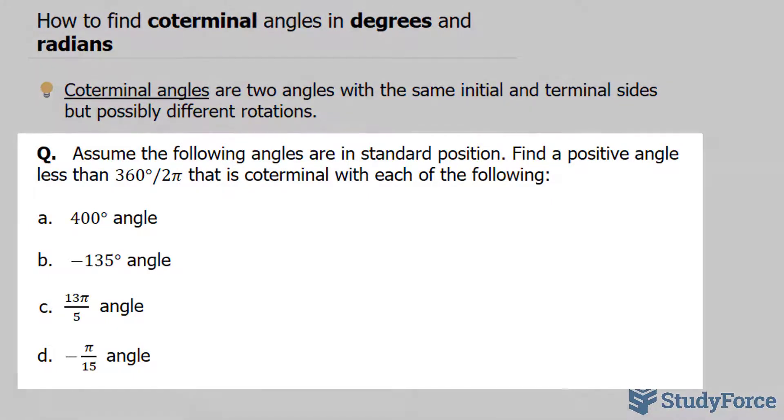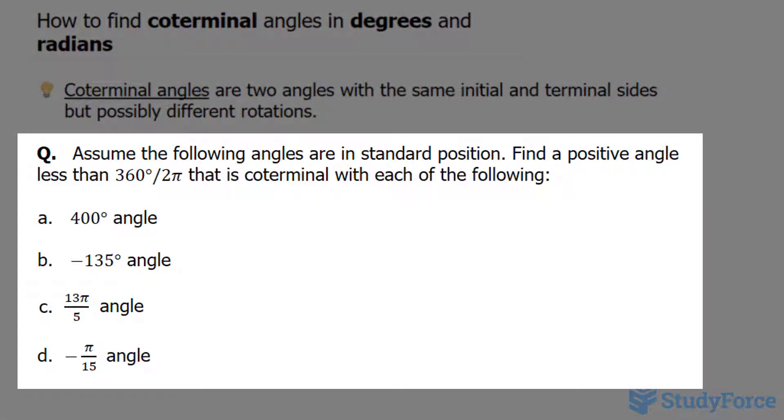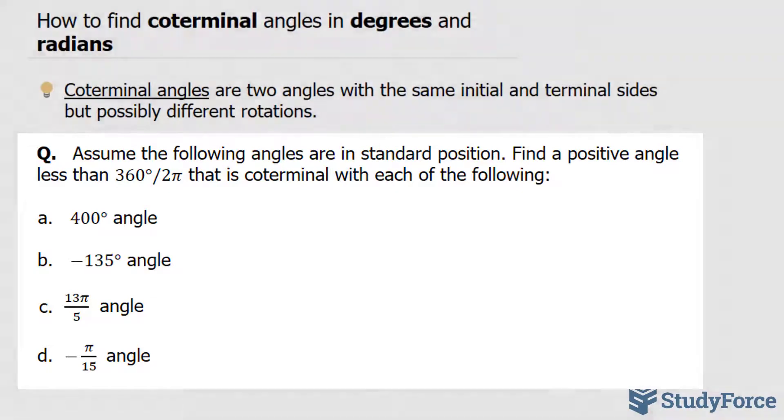Question reads, assume the following angles are in standard position, find a positive angle less than 360 degrees or 2 pi radians that is coterminal with each of the following.